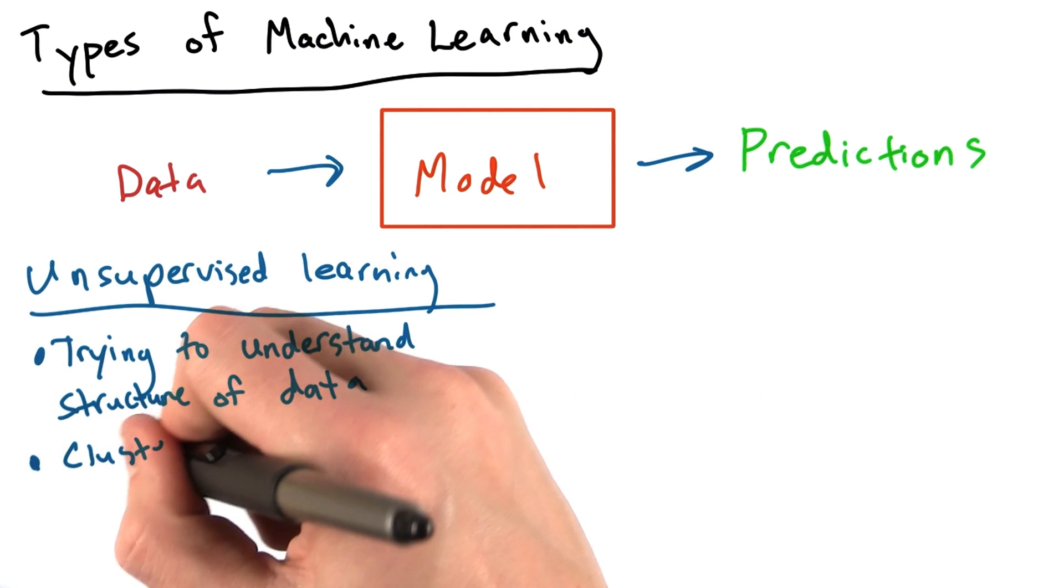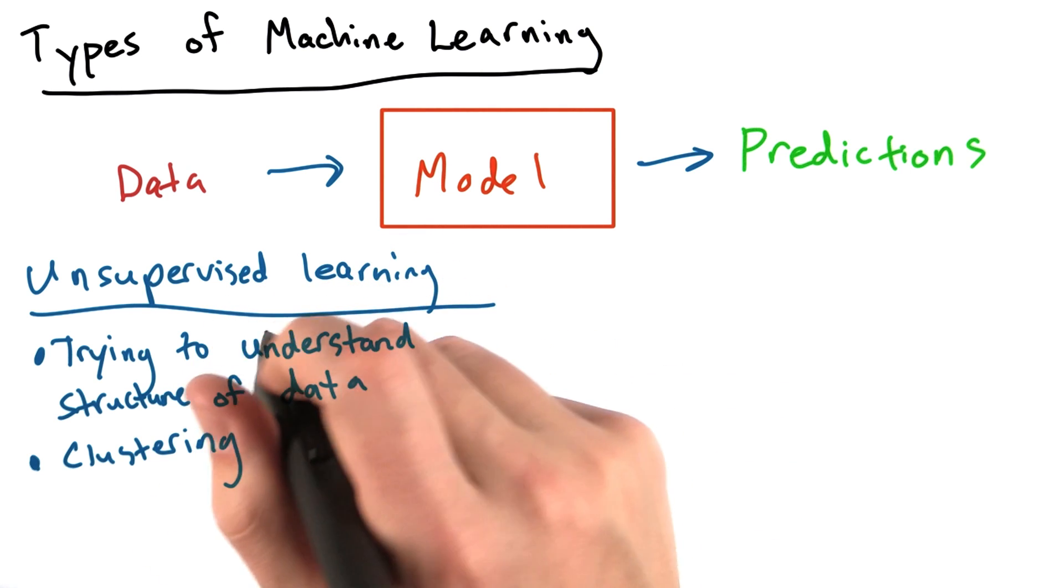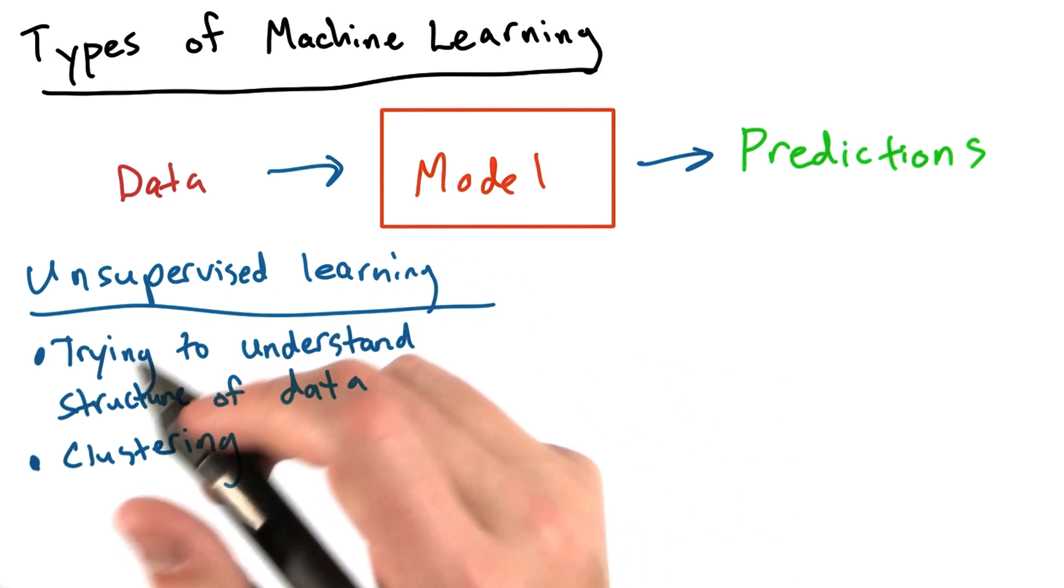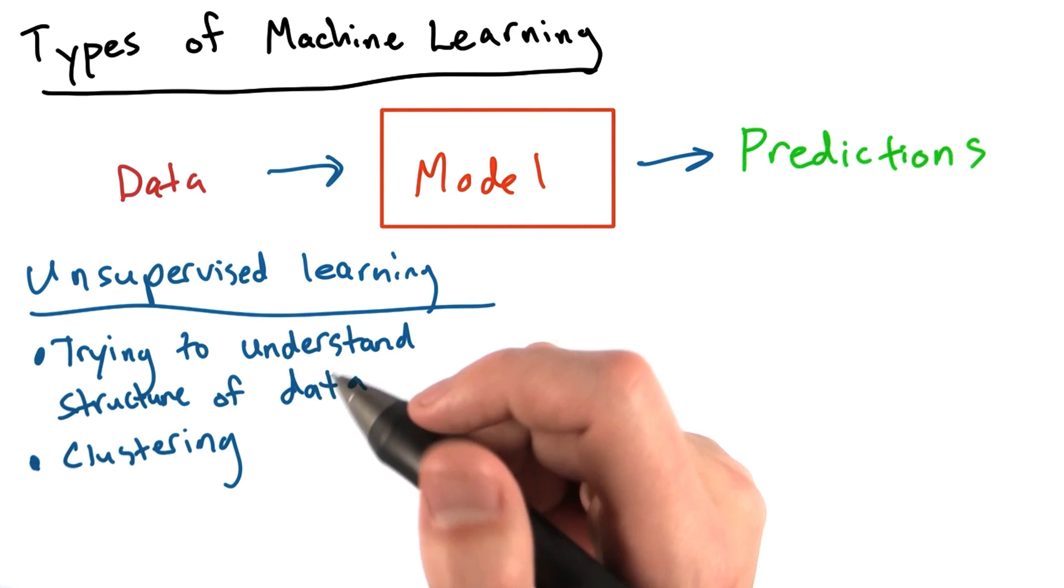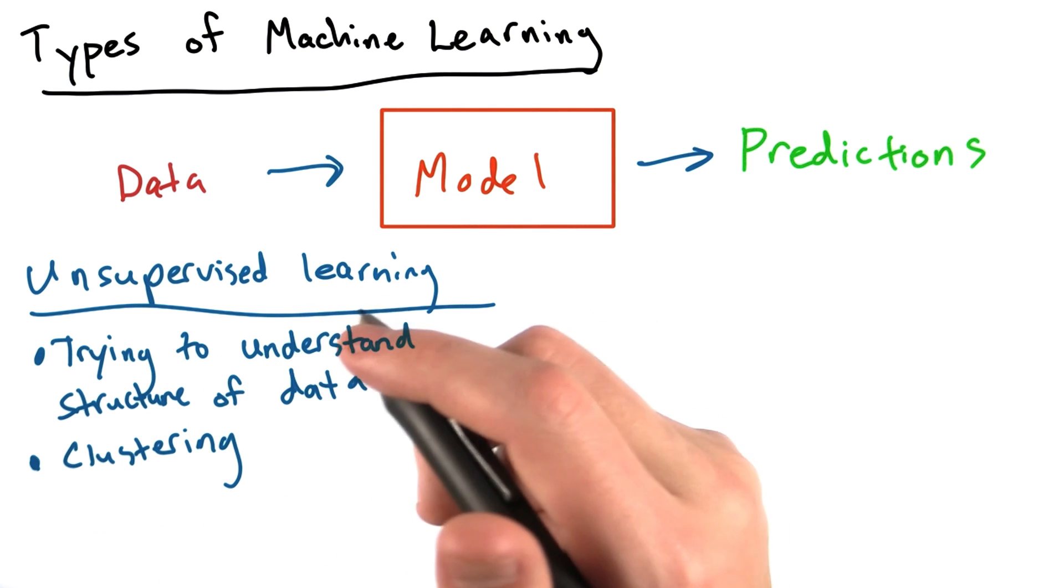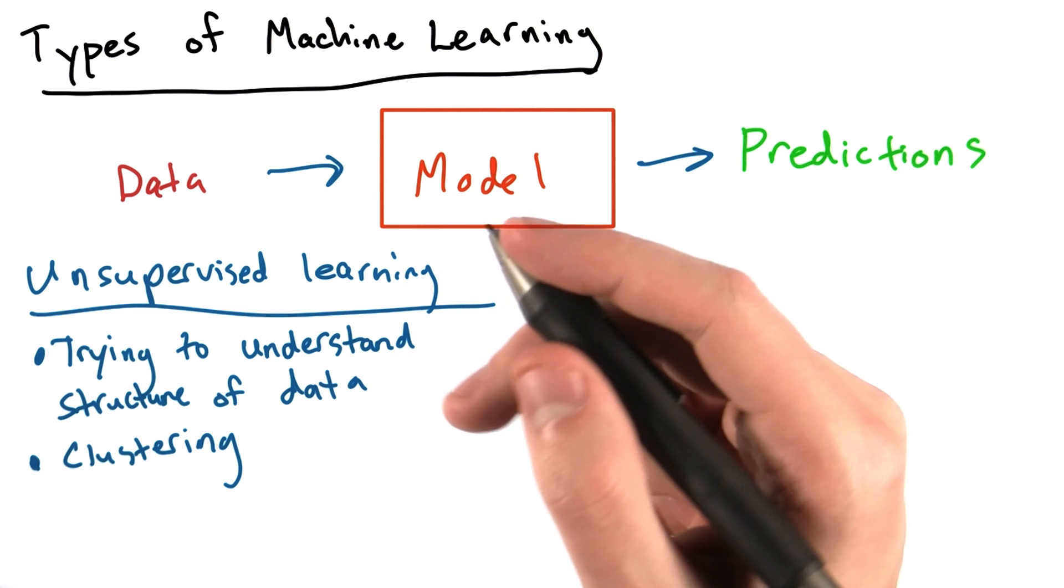When performing unsupervised learning, we don't have any such training examples. Instead, we have a bunch of unlabeled data points and we're trying to understand the structure of the data, often by clustering similar data points together.